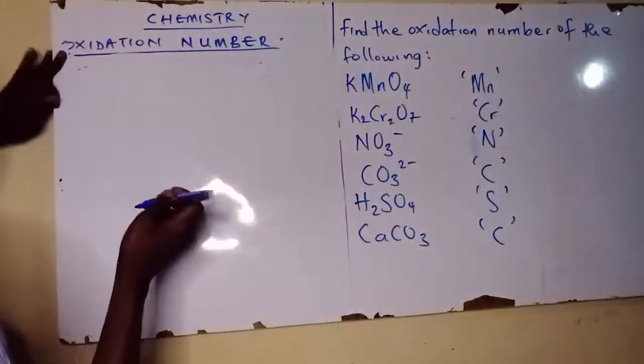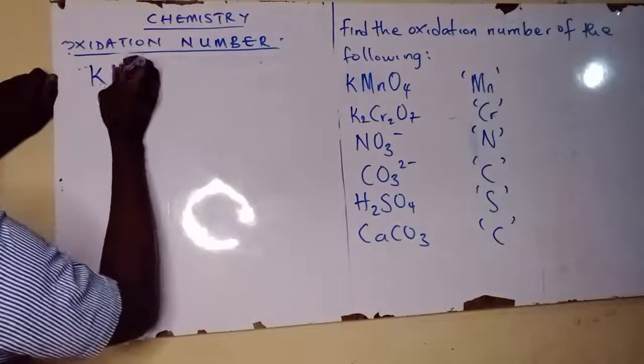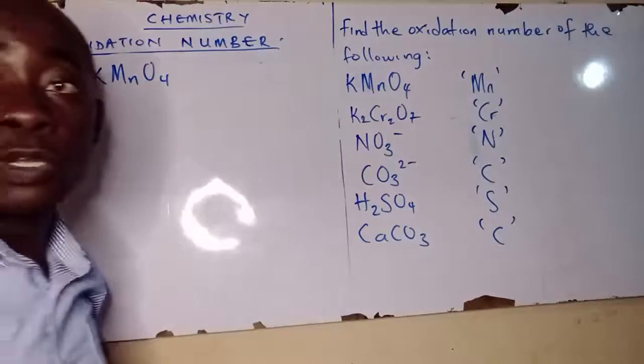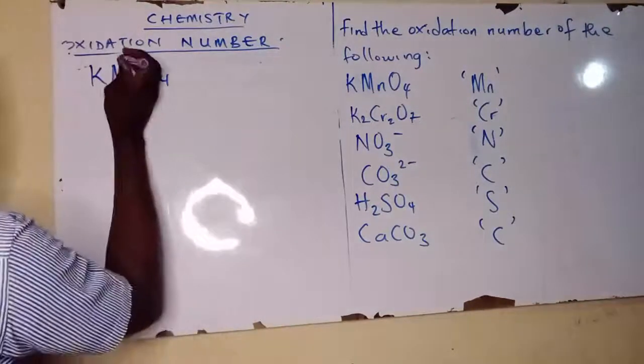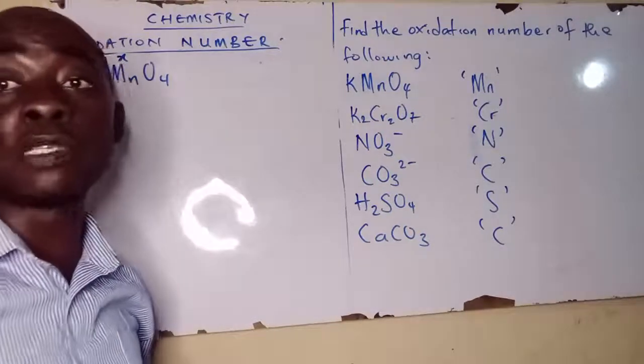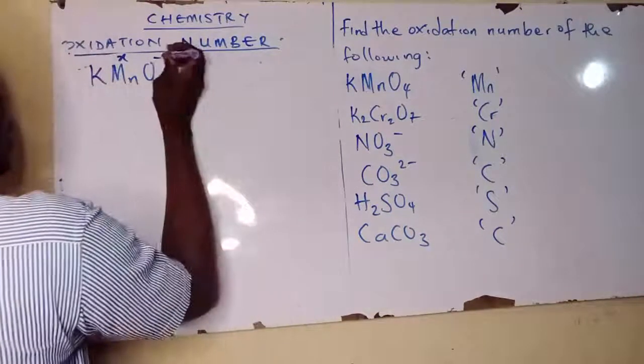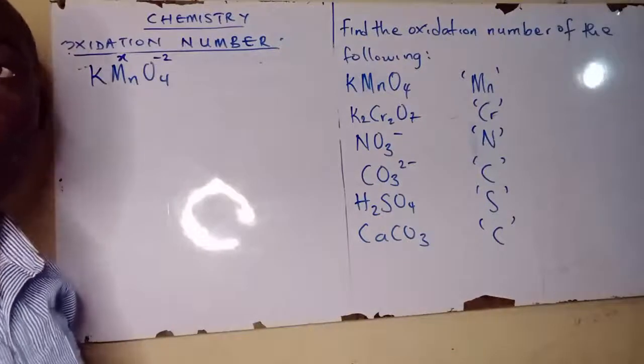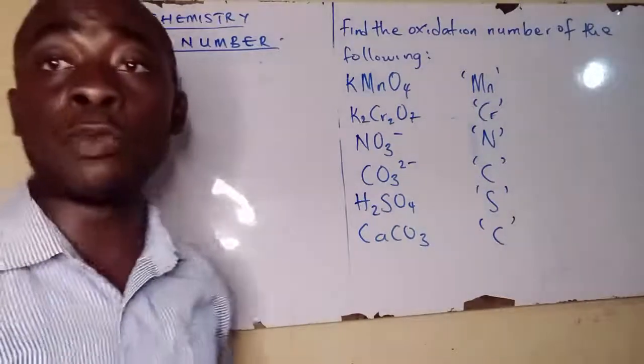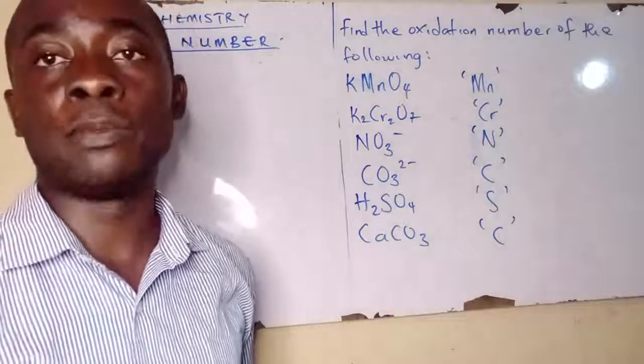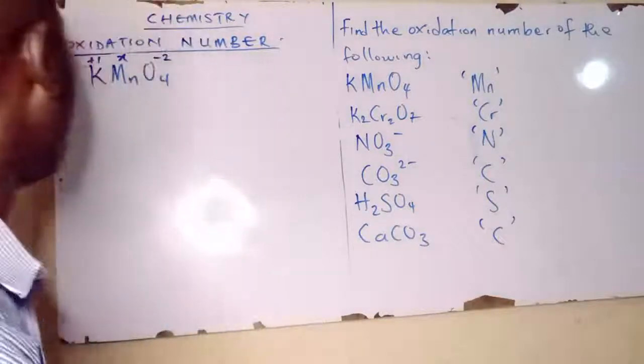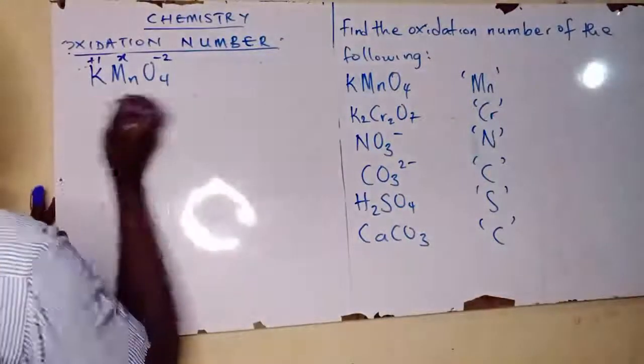Now, if we relate to the KMnO4, manganese is unknown, so we are going to target it as x. The valence electron of oxygen is always minus 2, whereas that of potassium is plus 1 because we have one electron in the outermost shell.